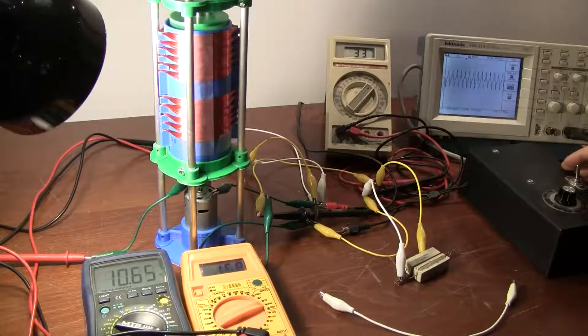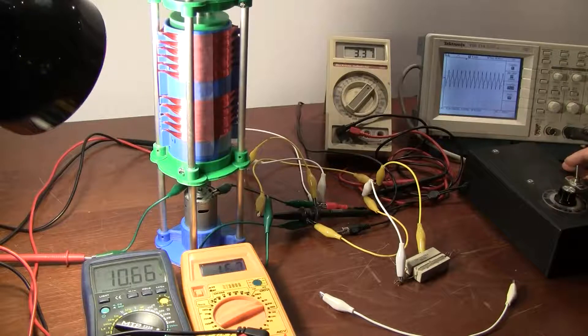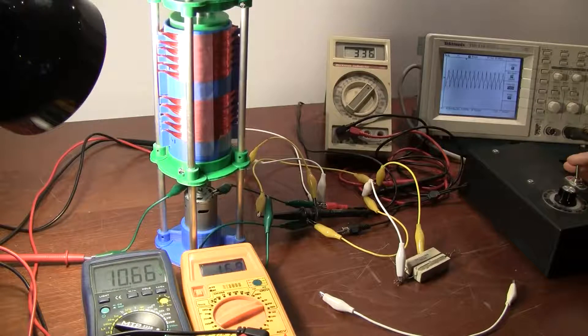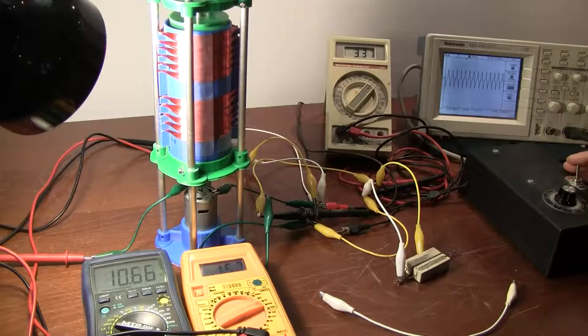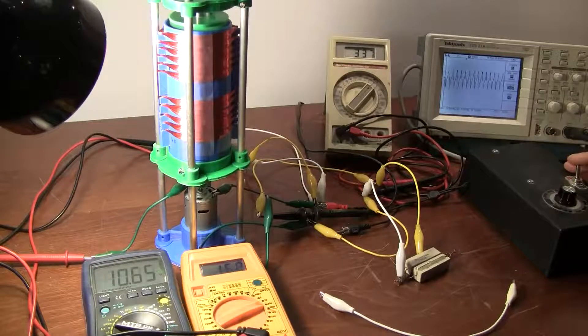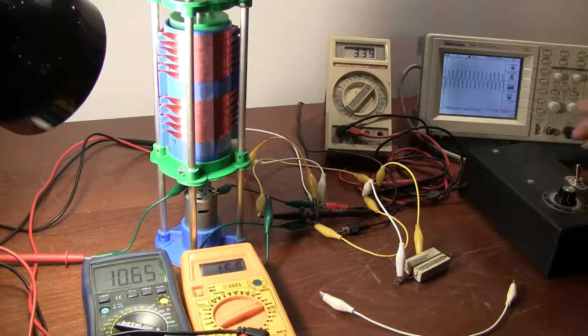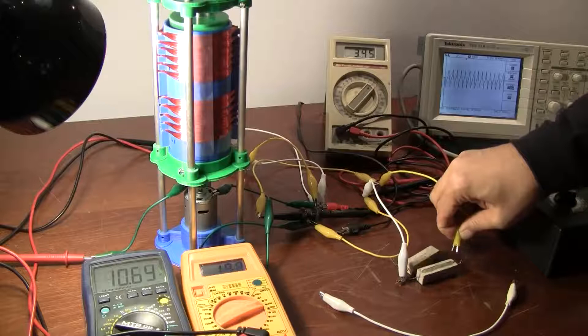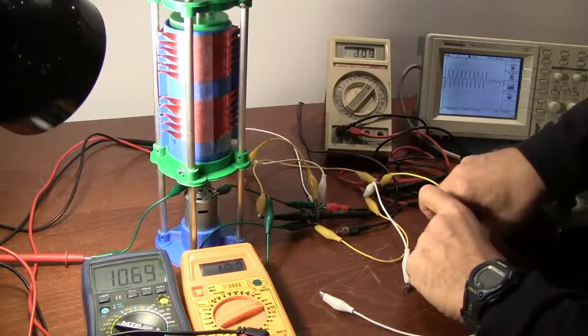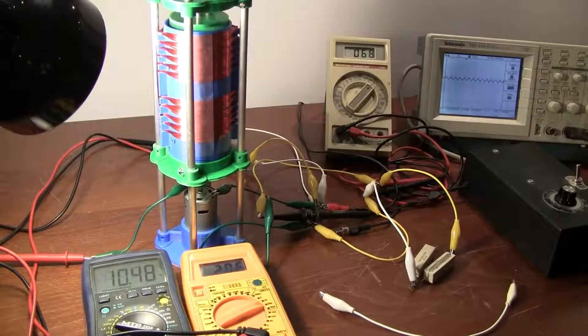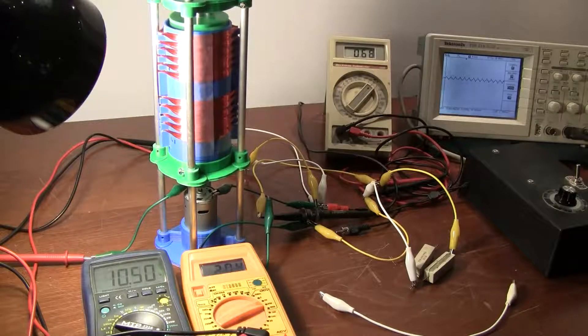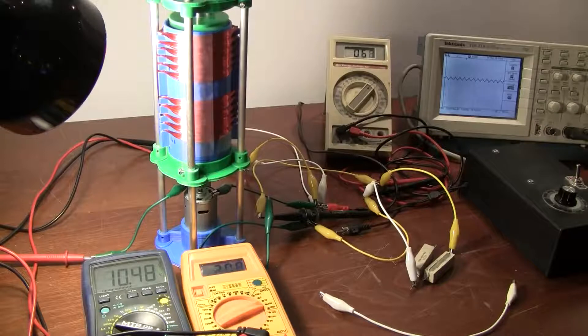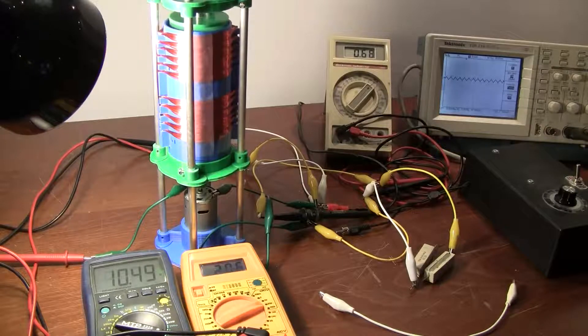So just to read it off: it's 10.66 volts, 1.169 amps, 3.37 RMS on the output. And if we go to 3 ohms, it goes to 10.48 volts at 2.205 amps, 0.68 volts RMS.